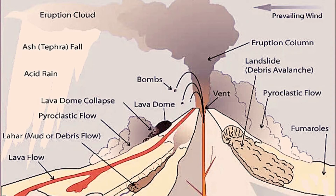Laha: when hot volcanic material mixes with water from streams or snow and ice, laha mudflows form. Mud flows can bury entire communities, like at Mount St. Helens in the 1980s. The positive outcome is that volcanic material breaks down and weathers to form some of the most fertile soils.